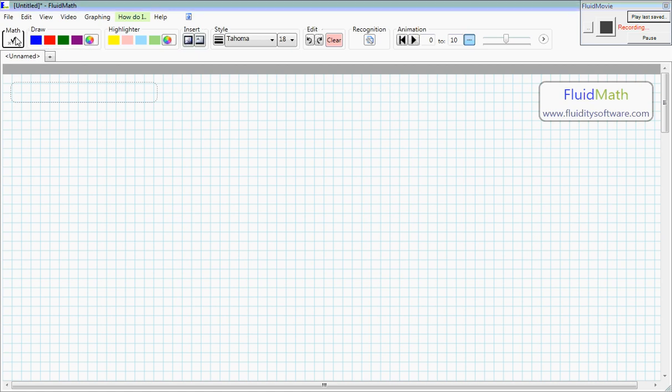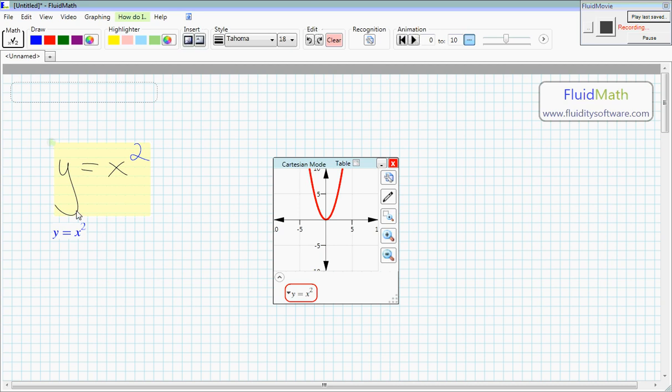So just as a quick review, with FluidMath you can handwrite mathematics like y equals x squared. You can create graphs from this with a single gesture. You can draw a line from the math out to the side and get a graph from it.